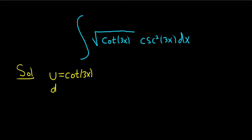So then du is the derivative of u. The derivative of cotangent is negative cosecant squared of 3x and then times the derivative of the inside function, so 3 dx. That's the chain rule, right? We always have to multiply by the derivative of the inside.